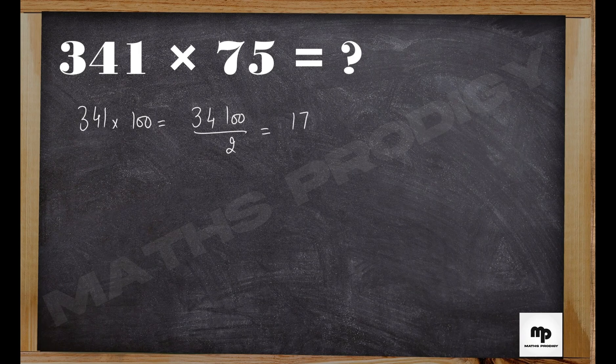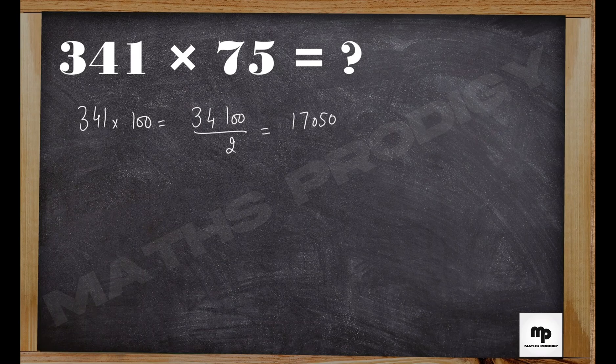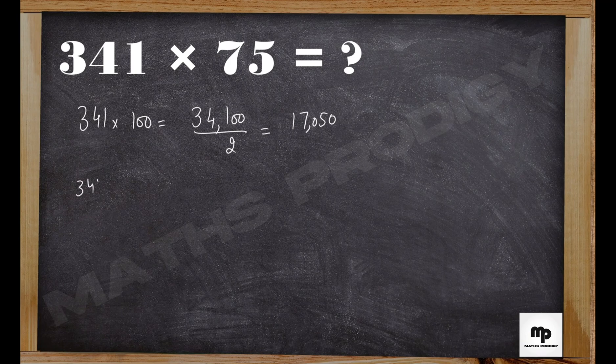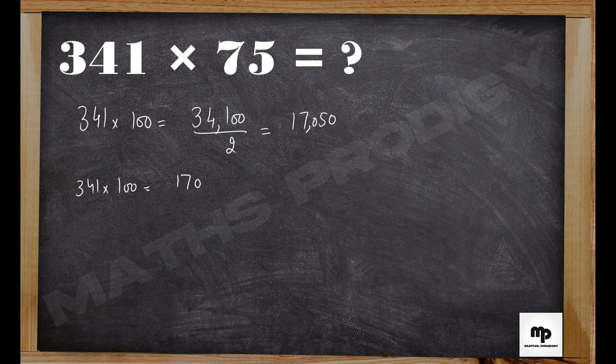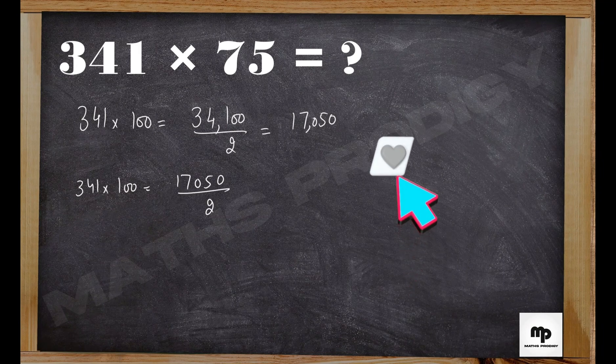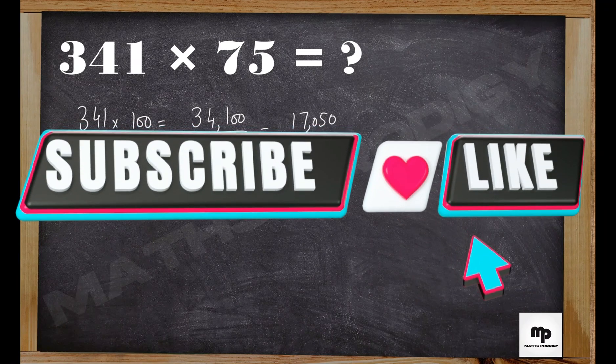Using place value makes it easier. The next step is the same - find half of 17,050 again.